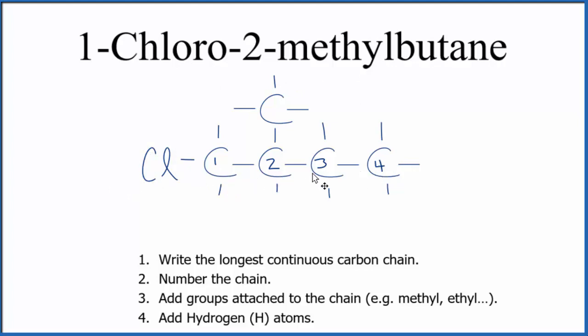Again, we have the longest chain. That's the one, two, three, four carbons. That's our butane. On the second carbon, we put our methyl group. And then on the first carbon, we put that chloro there.